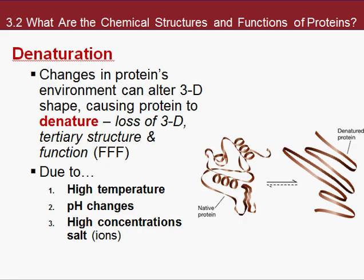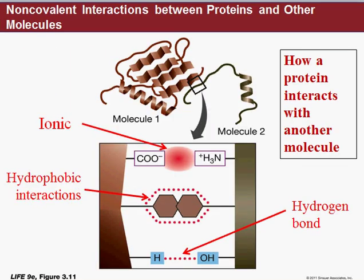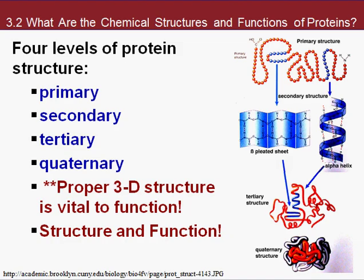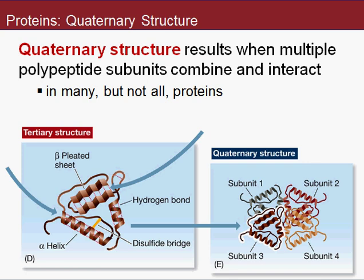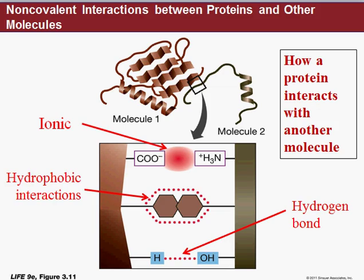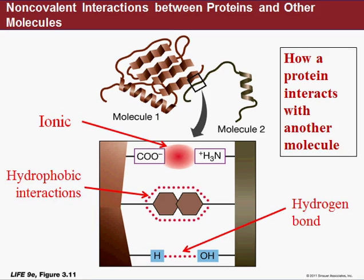I can't emphasize enough how important these levels of organization are. Review them carefully: primary, secondary, tertiary, quaternary — know the definitions and examples. For secondary: alpha helix and beta sheets, formed by hydrogen bonds. For tertiary: all types of bonds — disulfide bridges, ionic, hydrogen, hydrophobic. Make sure you review that in the notes and PowerPoint slides.